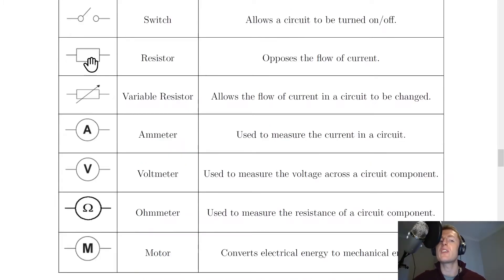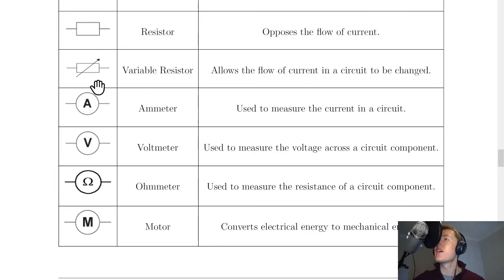Next we have a resistor. So a resistor has this kind of rectangle shape, this box shape. And it opposes the flow of current. Next the variable resistor is like a resistor. So it's like this rectangle box shape. But it's also got an arrow going diagonally through the rectangle. And the function of a variable resistor is that it allows the flow of current in a circuit to be changed by changing the resistor. Remember that word variable means to change. So it's a resistor that can have its resistance changed, which means that we can change the current in a circuit.